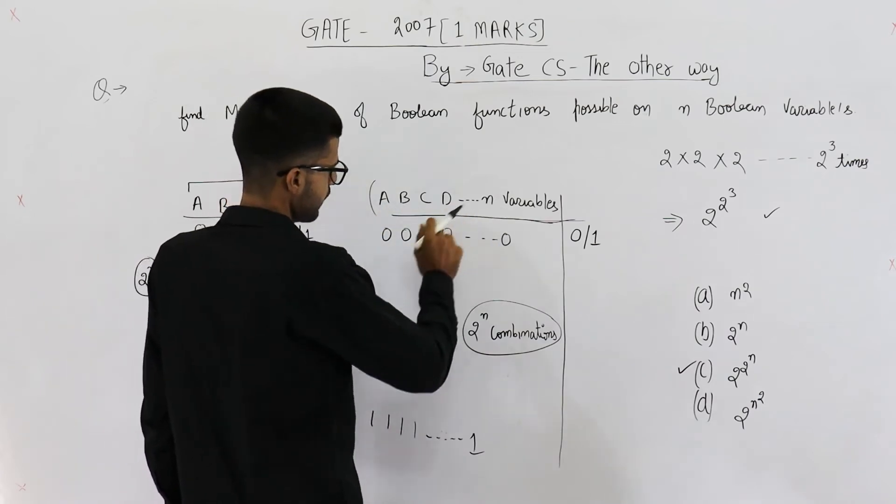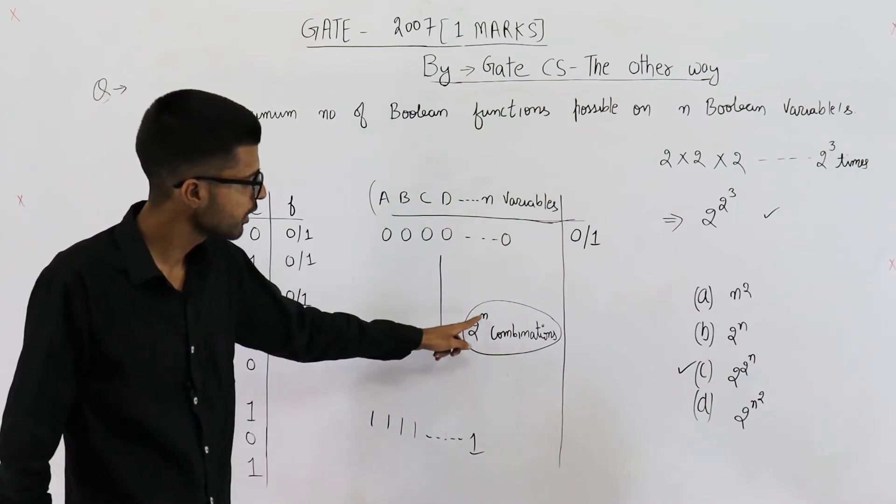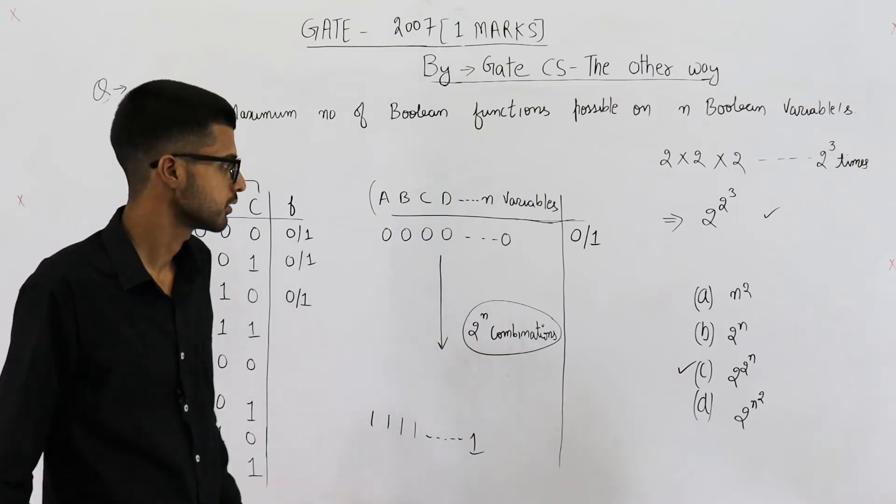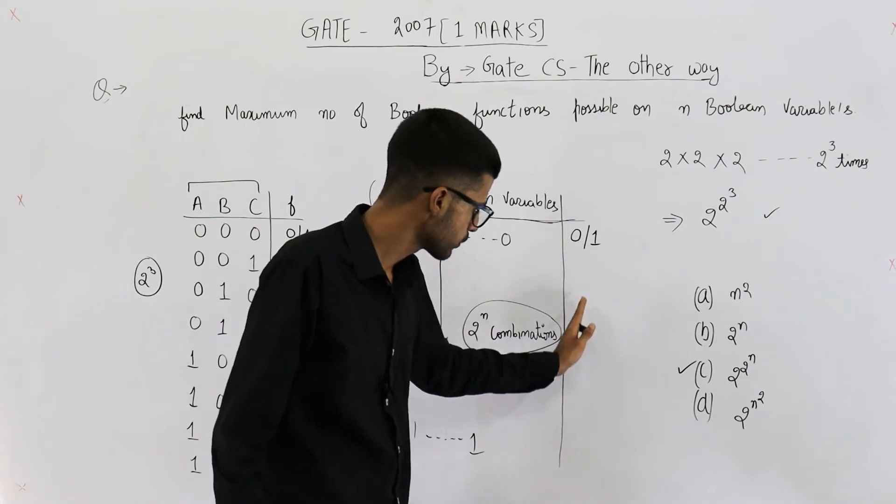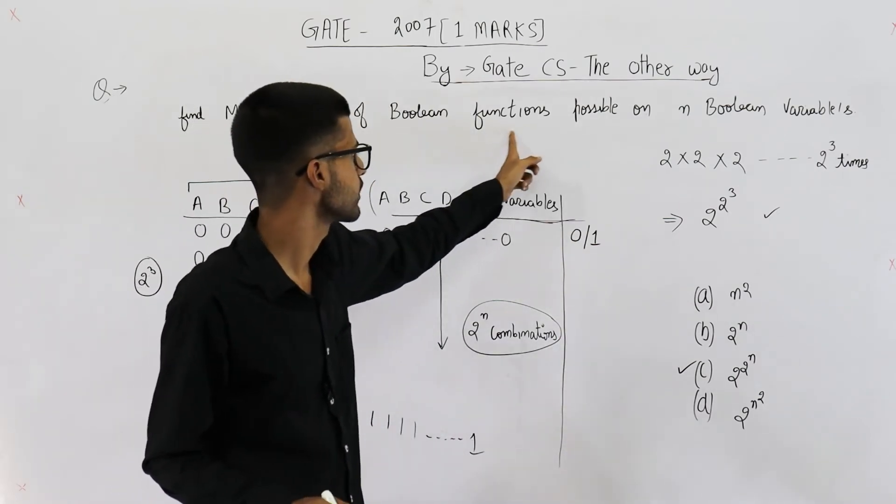So you have n variables. How many input combinations are possible? There will be 2 raised to the power n combinations. At all of these input combinations, you need to define an output to define this function.